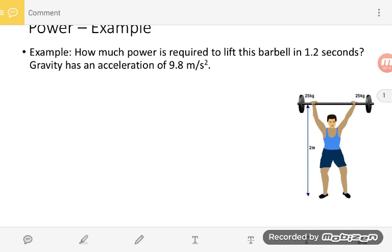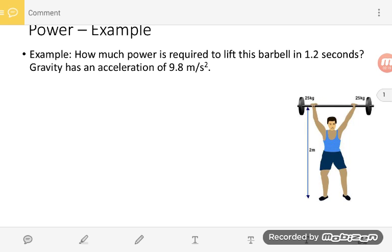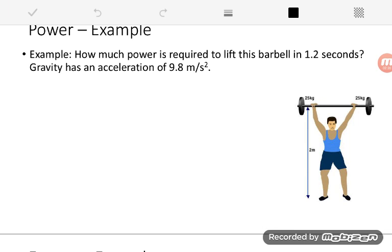So let's start with an example where we really have to go through several steps. How much power is required to lift the barbell on this picture in 1.2 seconds? And it tells me that gravity has an acceleration of 9.8 meters per second squared. What we can do is say, it's asking how much power, so I'm obviously going to use power is equal to work over time. And I have the time. The time is 1.2 seconds, but I don't have the work yet.